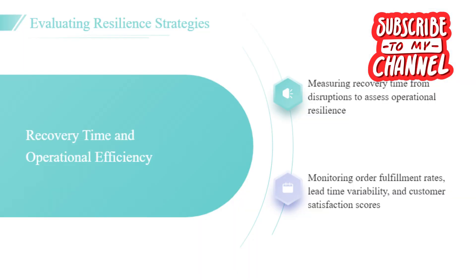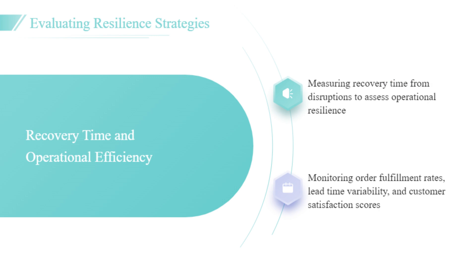Key metrics for measuring supply chain resilience. To effectively assess supply chain resilience, organizations must track several key performance metrics. Metrics such as supply chain agility, recovery time, and overall operational efficiency are crucial for evaluating resilience strategies. For instance, a company may measure its recovery time from disruptions to gauge how quickly it can resume normal operations after an incident. Monitoring these metrics provides valuable insights into the effectiveness of resilient strategies and aids in identifying areas that require improvement.